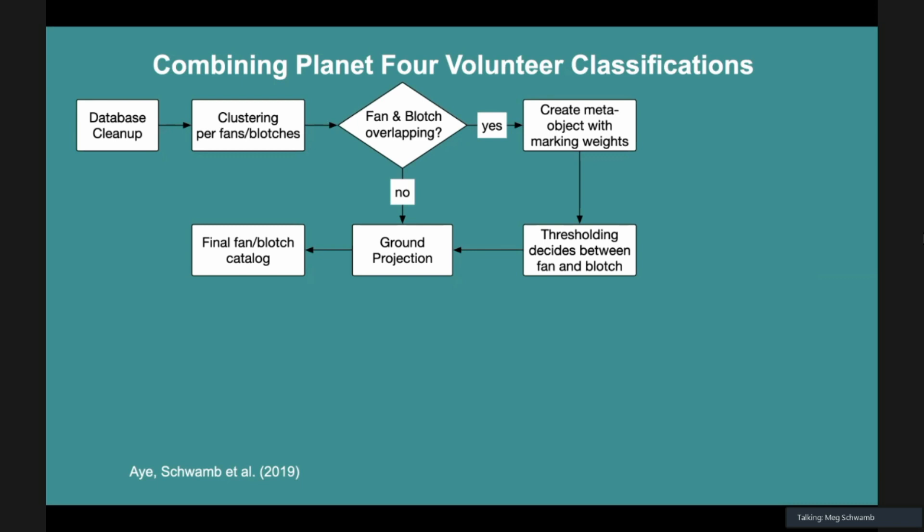We take their individual classifications and combine them together. If there is a fan feature and a blotch feature, because we cluster them separately, we figure out where they're overlapping. Based on the majority vote, we decide whether the feature these people marked is a fan or a blotch. Then we're ground projecting that.